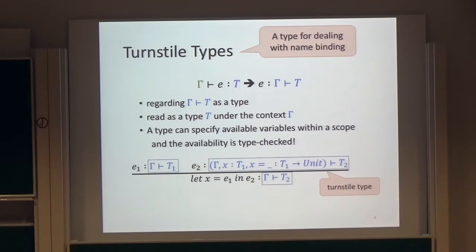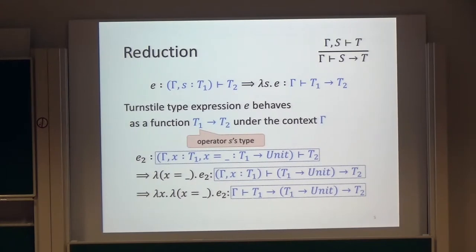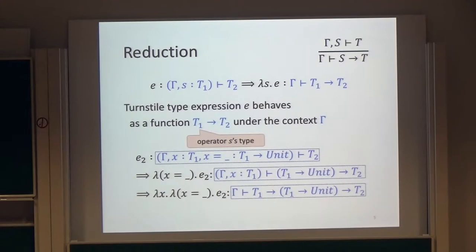For example, let expressions — and this name binding is type checked. You may wonder how to evaluate a turnstile type expression. This is a reduction rule for turnstile types. A turnstile type expression E is translated into a lambda expression: lambda S dot E. So it behaves as a function T1, R of T2.